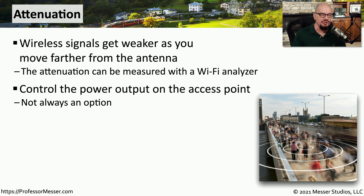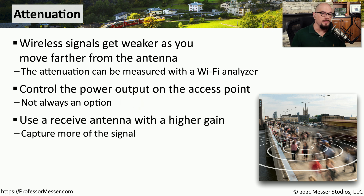You may be able to control the output power on your access point. If you need to increase the signal strength so that one particular area is able to connect better, you may be able to increase that on the access point — though not all access points have that functionality, so make sure you check the documentation. You might also be able to replace the antenna on your access point with one that provides more gain. Some wireless access cards support adding an external antenna, so you might be able to add one on your desk to receive the signal better.